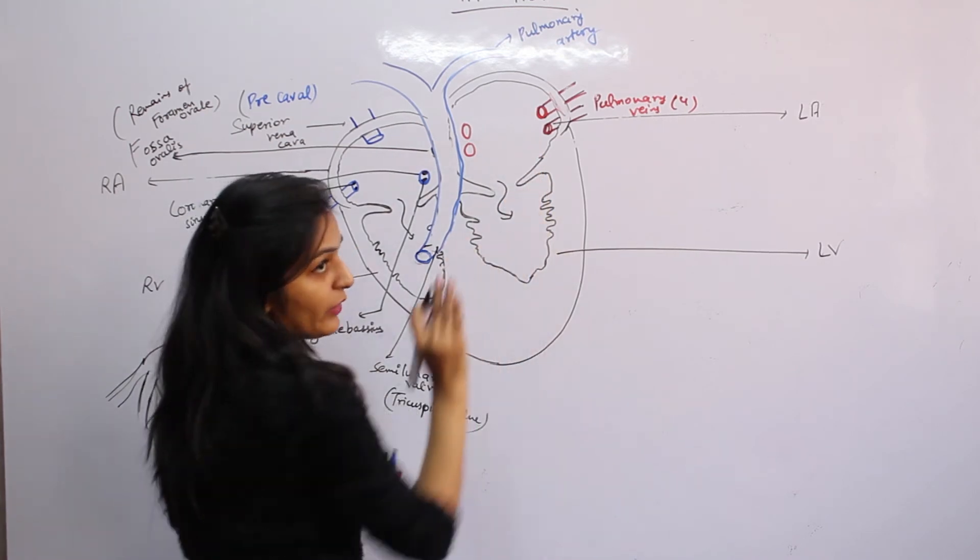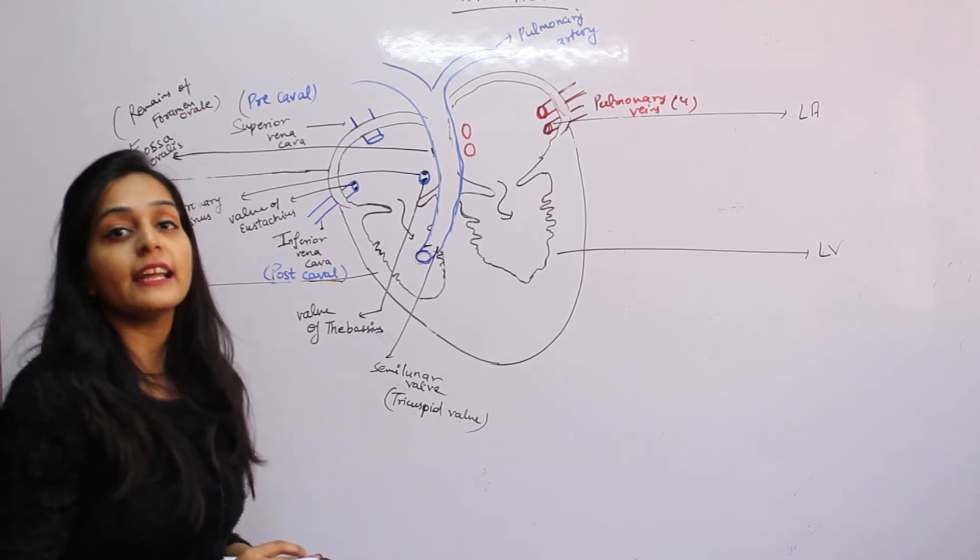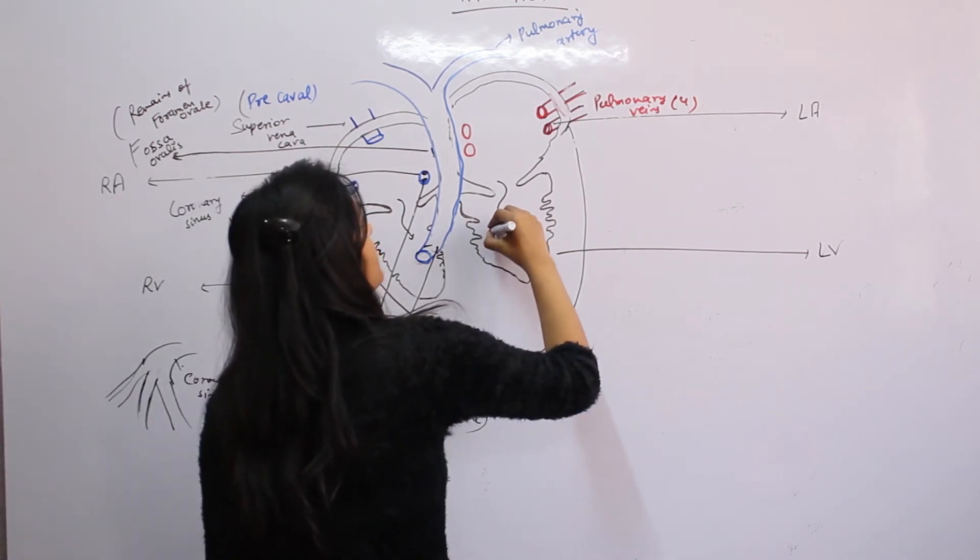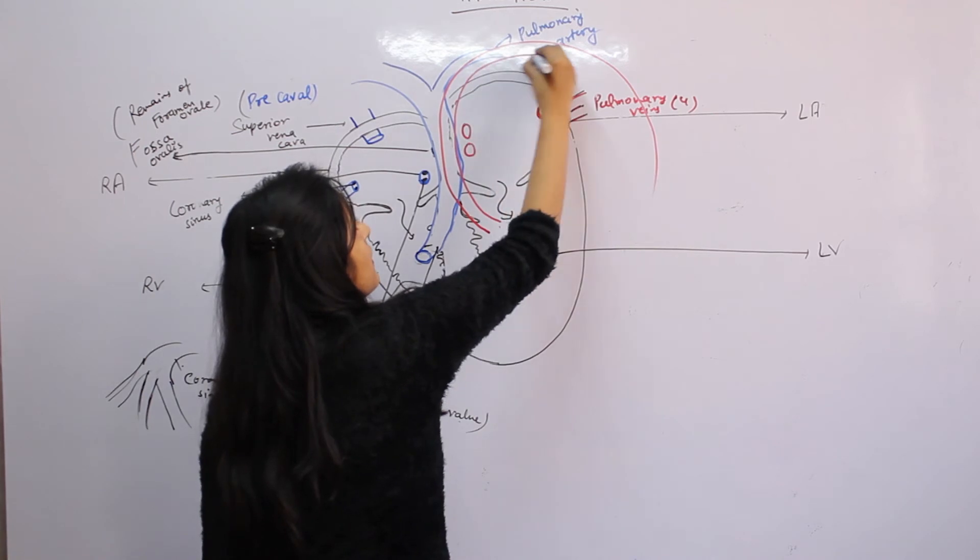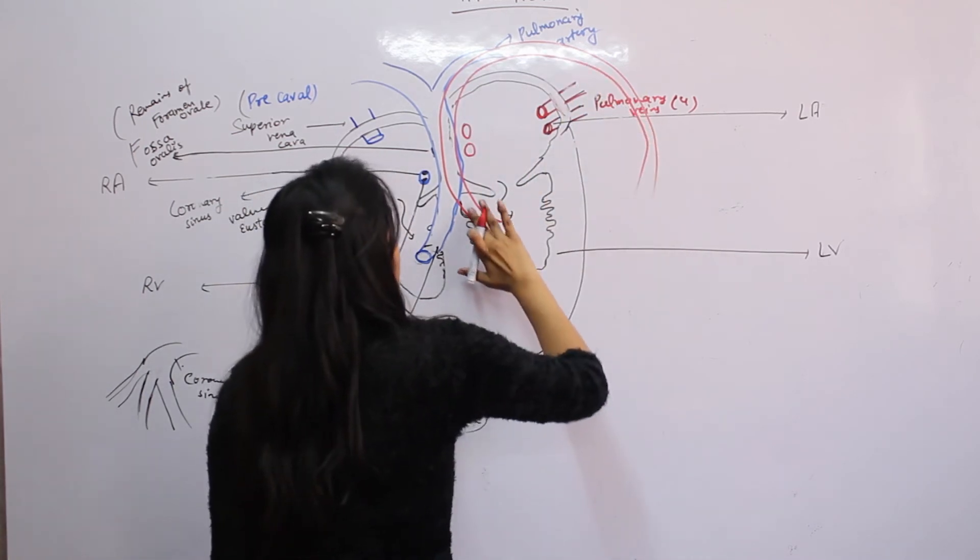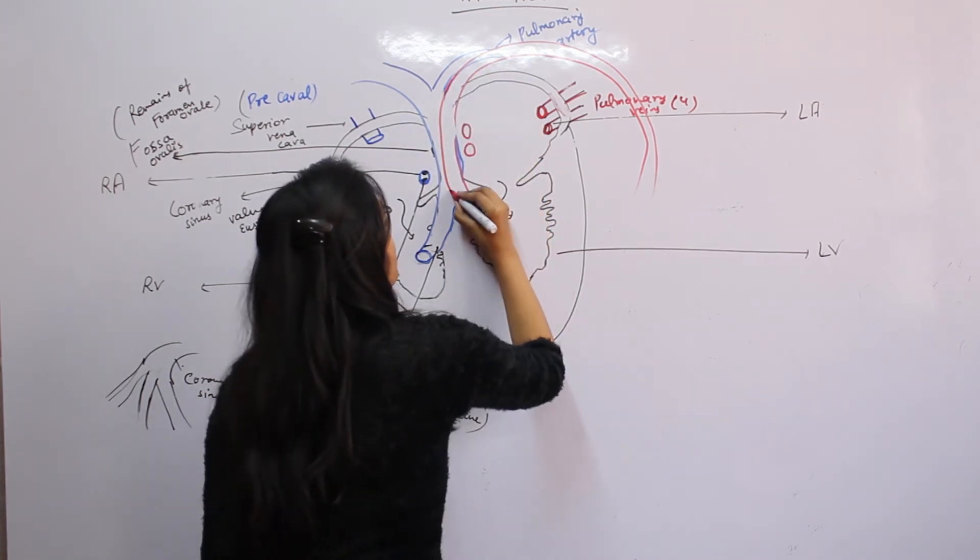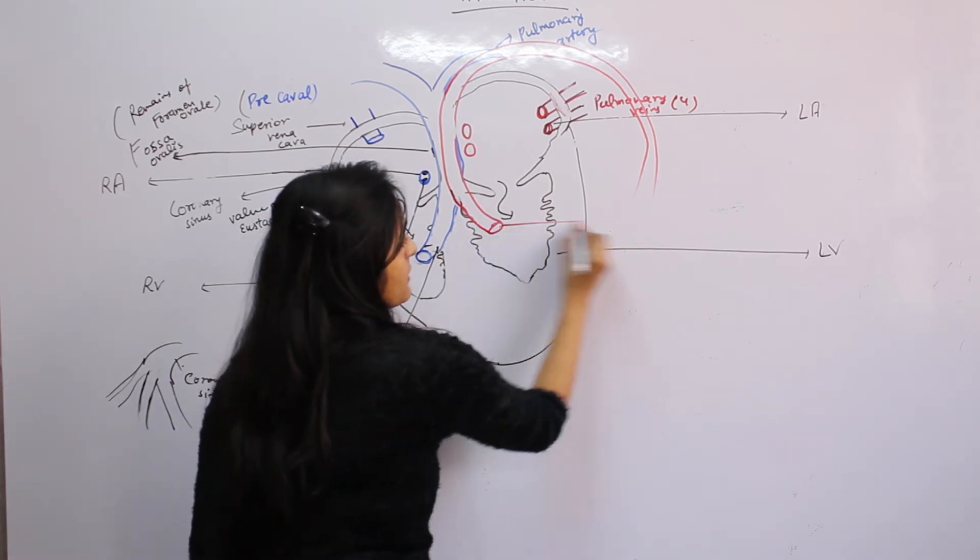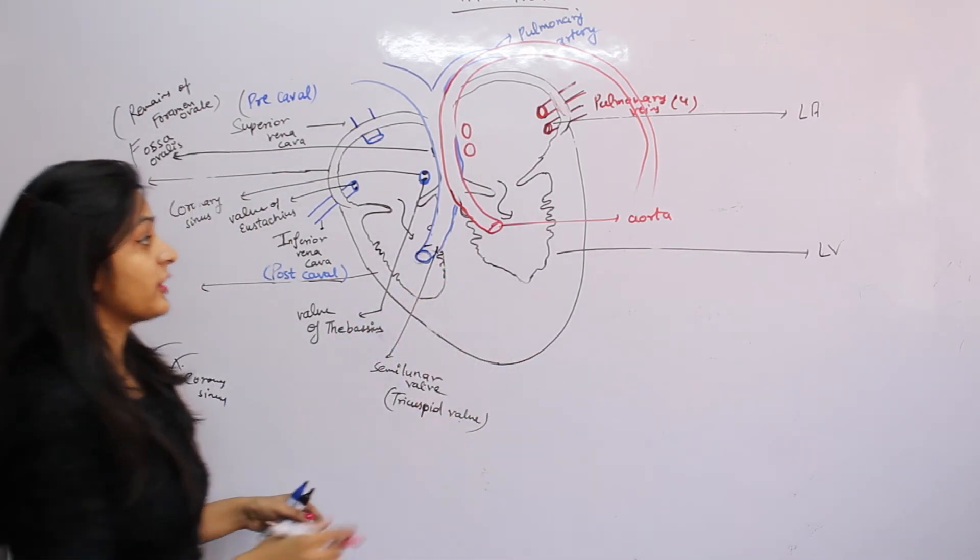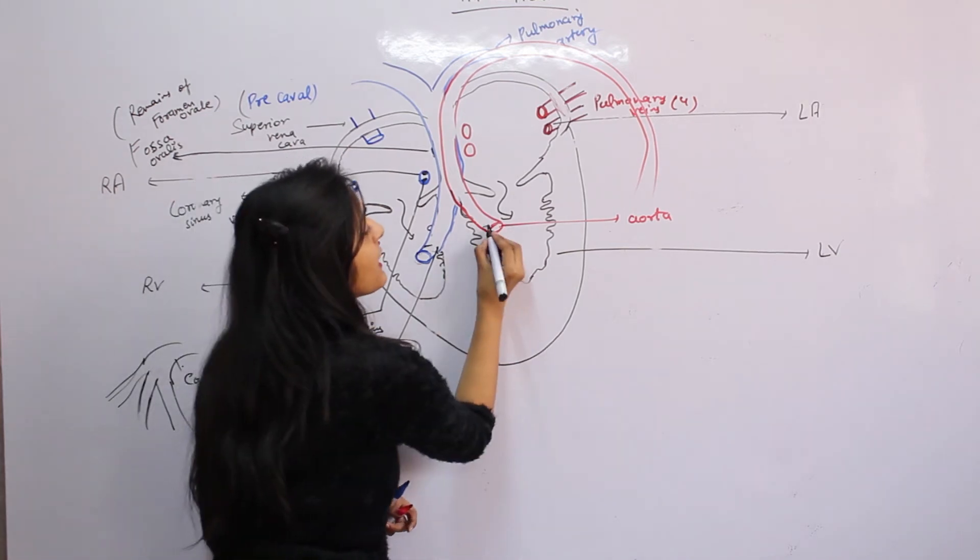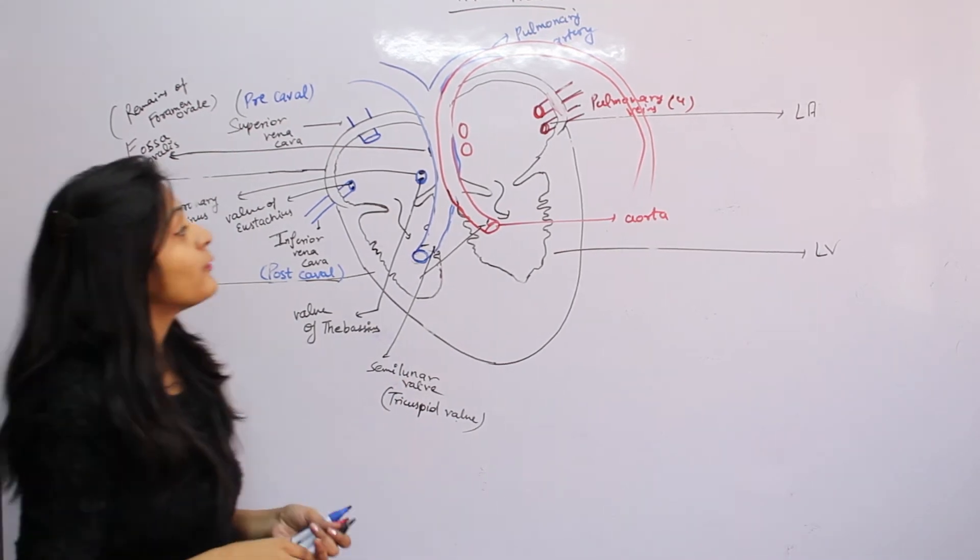From this chamber, oxygenated blood from the ventricle should be taken to the body organs. This will be taken via the aorta. Aorta also contains a semilunar valve, which is also a tricuspid valve. These two are semilunar valves.